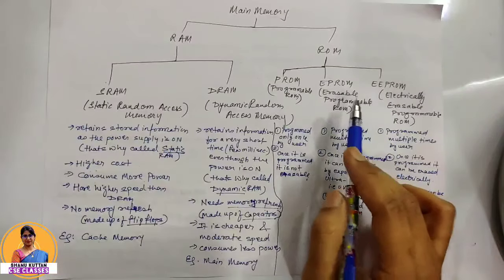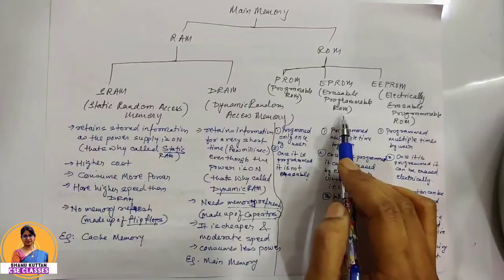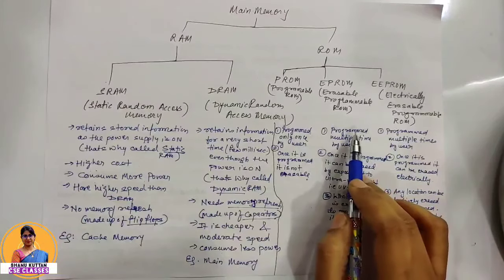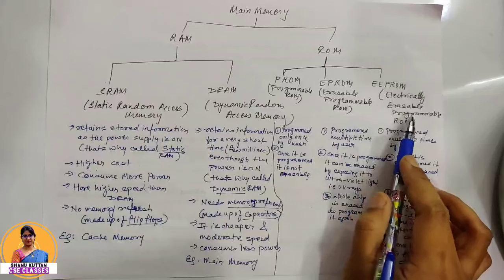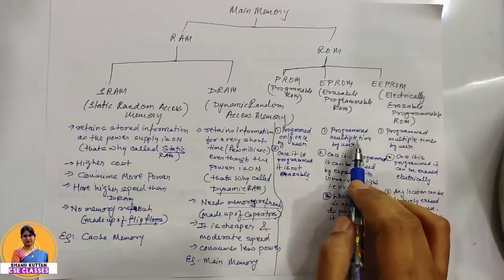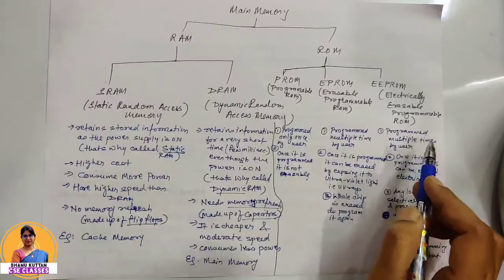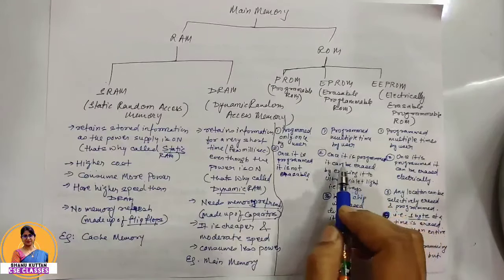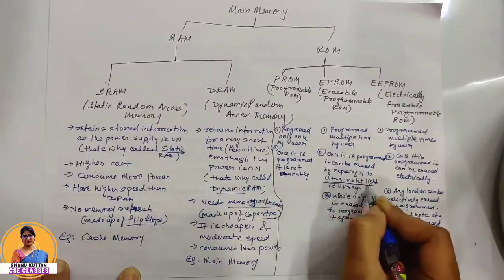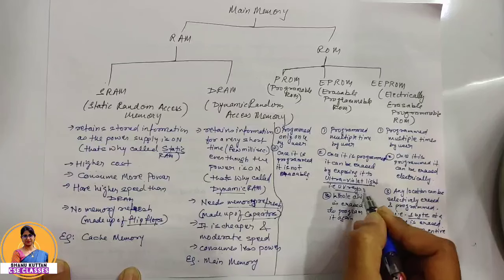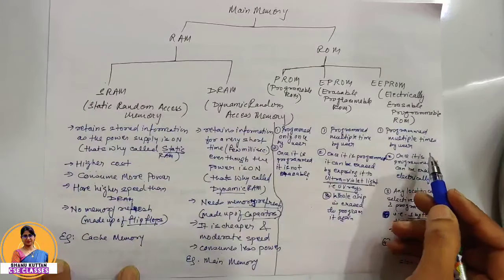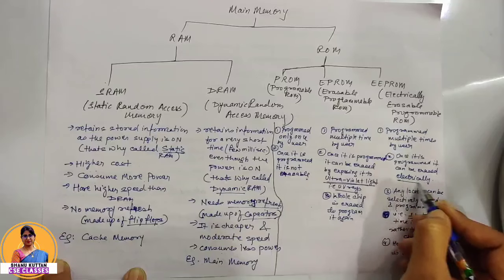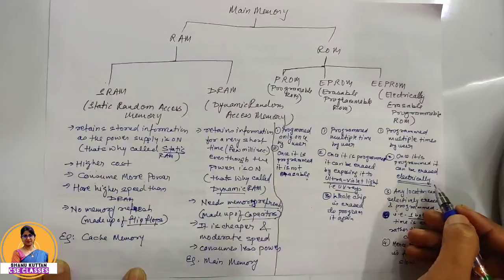The next advanced version is EPROM (Erasable Programmable Read Only Memory). It can be programmed and erased multiple times. It is erased using ultraviolet (UV) light — we call it UV erase. After erasure, the whole chip is erased and we have to write it again.